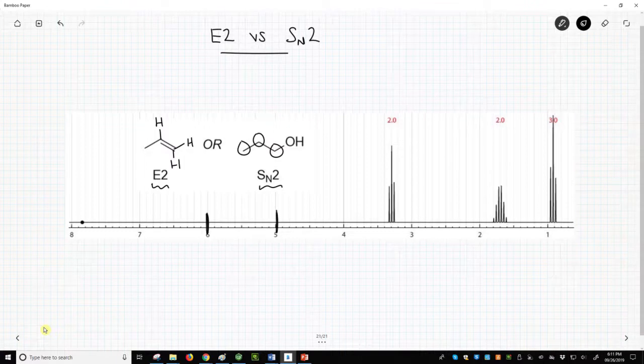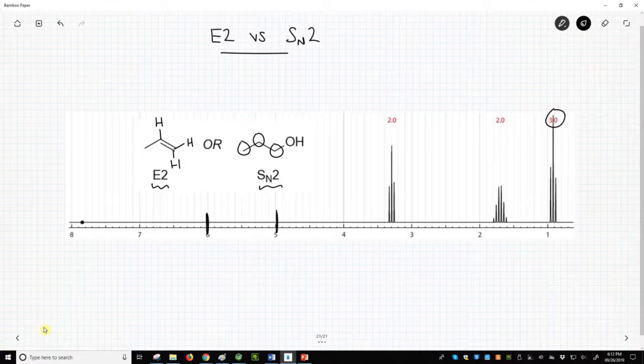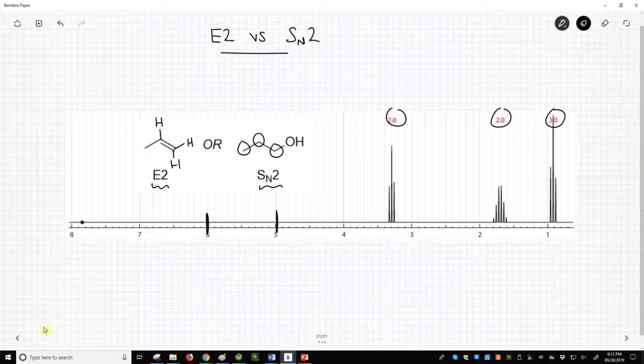By integration, we see signals of 3, 2, and 2 hydrogens. Of these three, the most downfield should be the CH2 that is next to the alcohol oxygen, and it should be in the 3-4 ppm range.